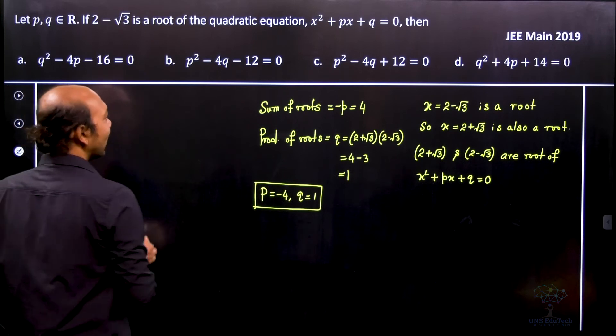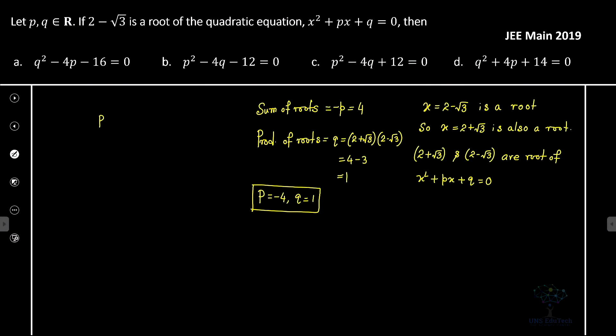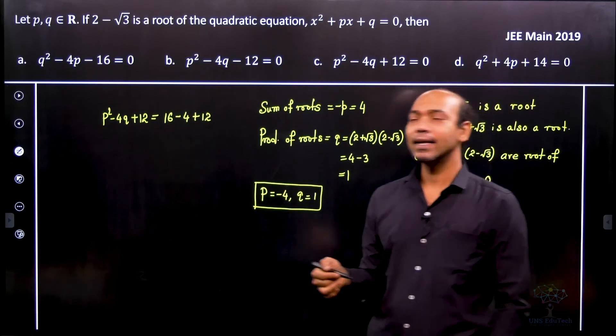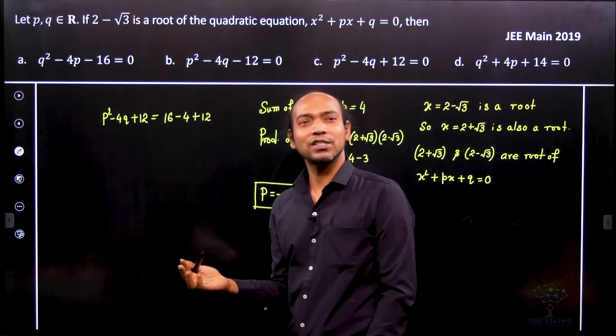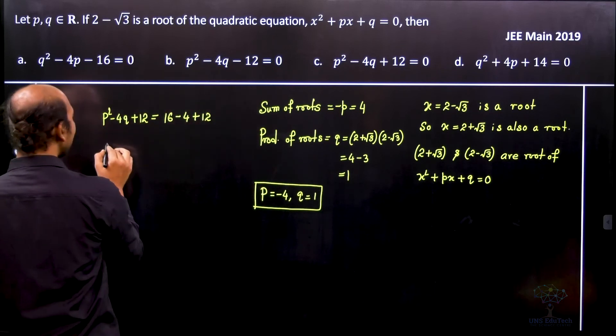Now notice that if we calculate p squared minus 4q plus 12, we get it as 16 minus 4 plus 12. So that's not a solution.